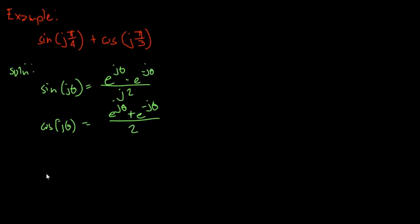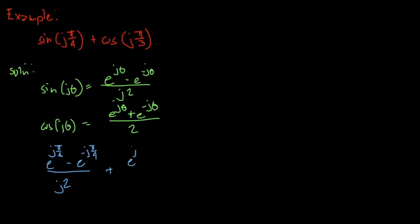For sine, that will be e raised to the power of jπ/4 minus e^(-jπ/4), all over j2. Plus, for cosine, it will be e raised to the power of jπ/3 plus e^(-jπ/3), all over 2.